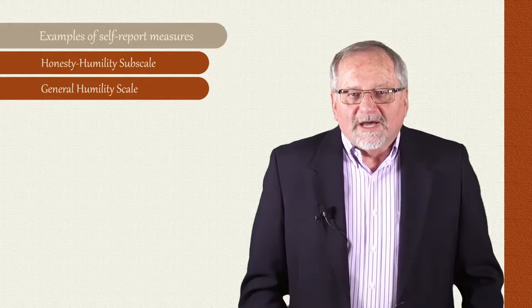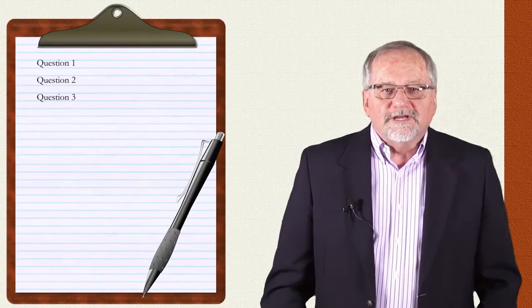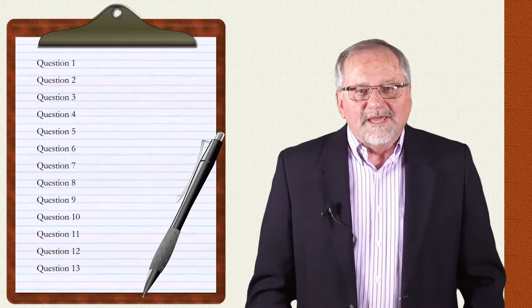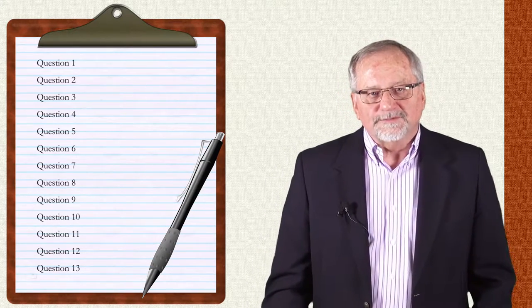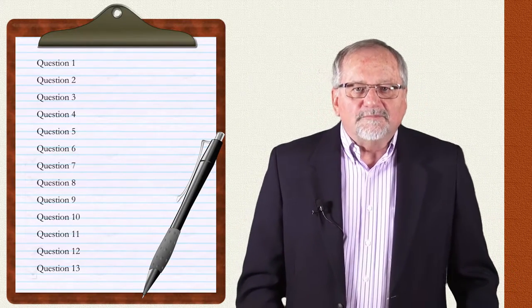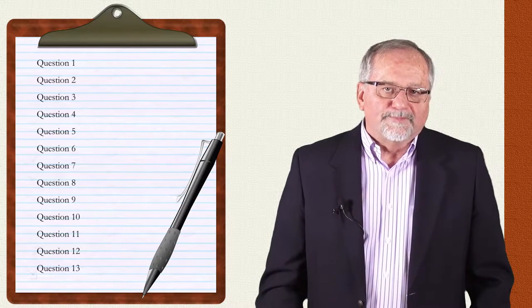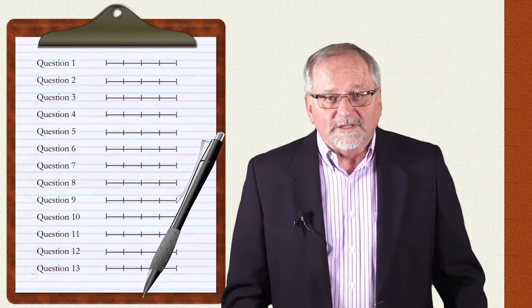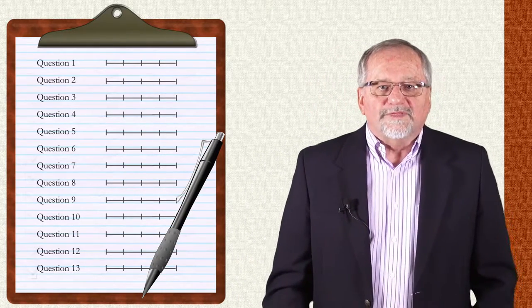The second scale that we'll talk about is called the general humility scale. This scale is a 13-item self-report scale based upon the conceptualization of humility presented in these lectures. It is currently unpublished, but its development is part of a study that will soon be submitted for publication. It is rated on a five-point Likert scale, strongly disagree to strongly agree, with higher scores indicating greater levels of humility.